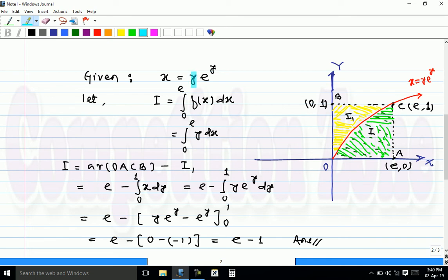Now obviously when y increases, then x increases. If we draw this curve x equals y e raised to y, this red curve is x equals y e raised to y.